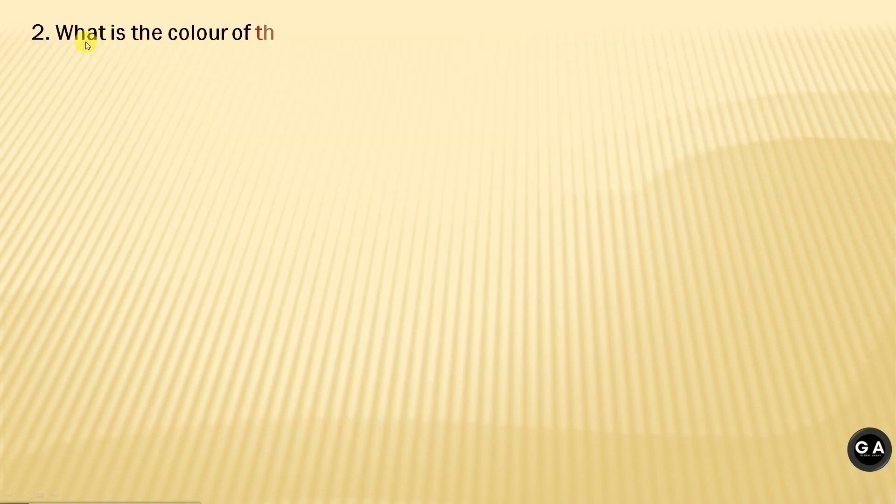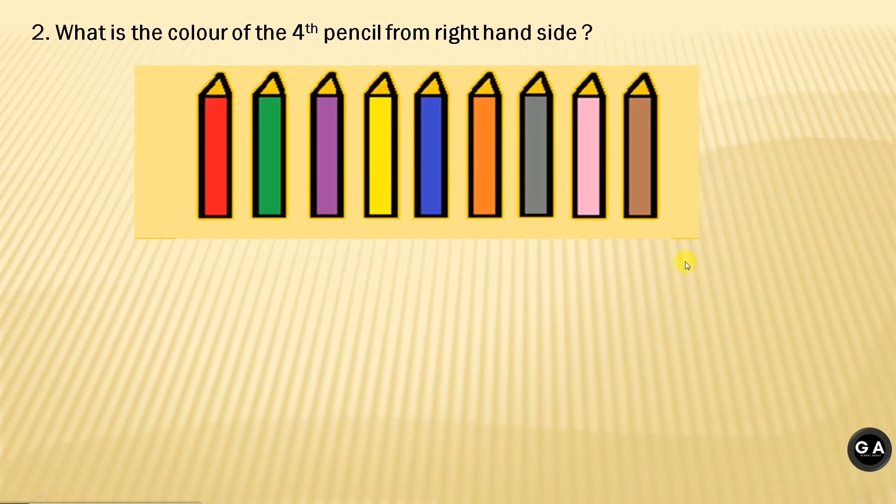Question number 2. What is the color of the fourth pencil from the right hand side? Options are: option A, pink; option B, green; option C, yellow; and option D, orange.